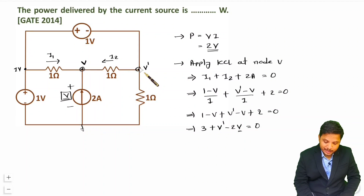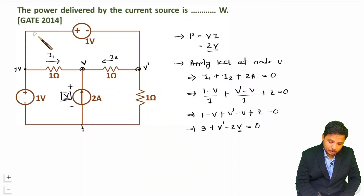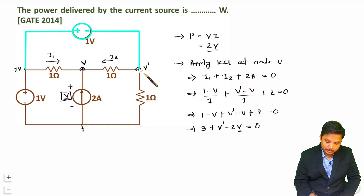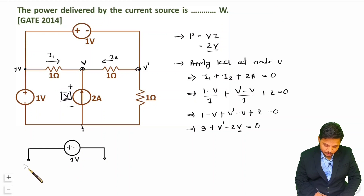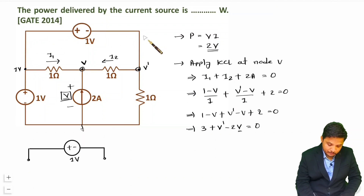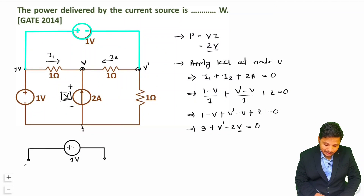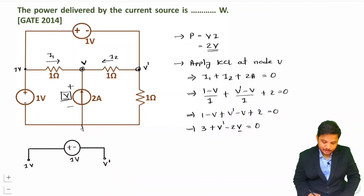To find V dash, observe the 1 volt voltage source. Let me draw it here. For this 1 volt battery, one terminal is 1 volt and the other is V dash.